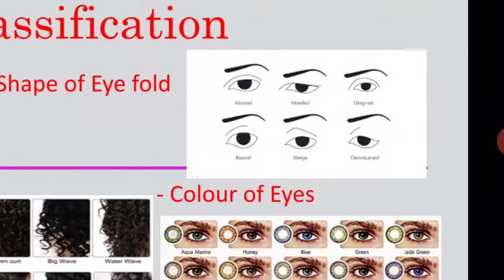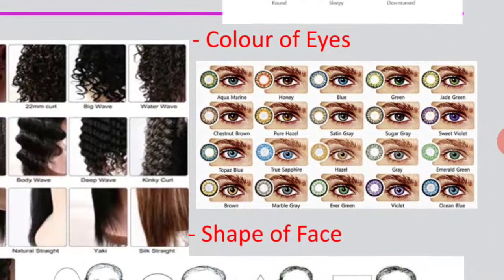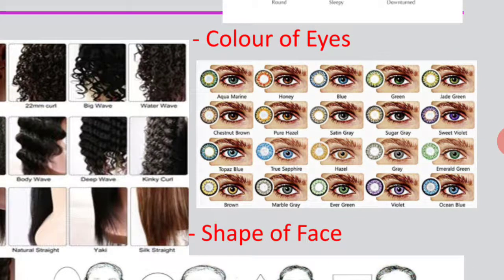Coming to the other side, I am showing different eye fold shapes which are also used for classification of race. Here there are 6 types of eye folds: diamond, hooded, deep set, round, sleepy and drowned. Then we can use eye color. There are different shades of eye color, ranging from ocean blue to aquamarine.